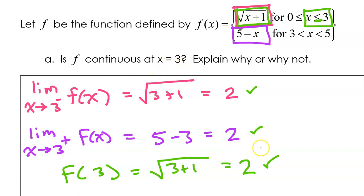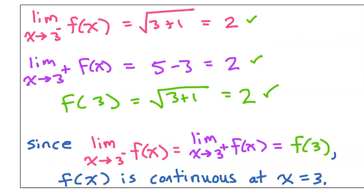So because all of these are equal, we know that the function is continuous at X equals 3. In conclusion, we can say: since the limit as X approaches 3 from the left equals the limit as X approaches 3 from the right, which equals the value of the function at 3, then f of X is continuous at X equals 3.